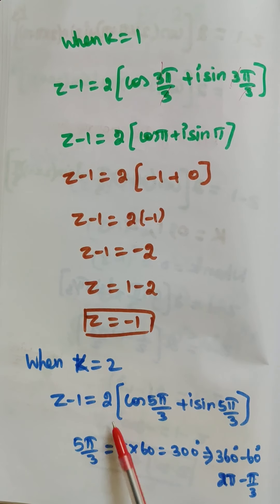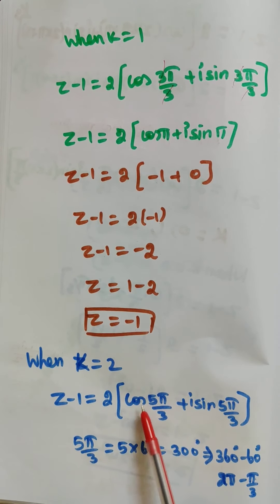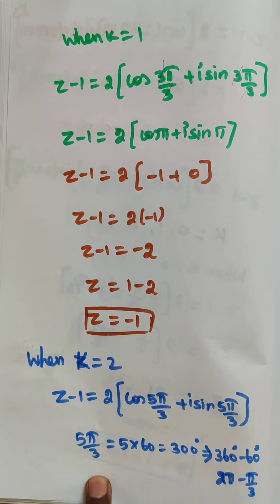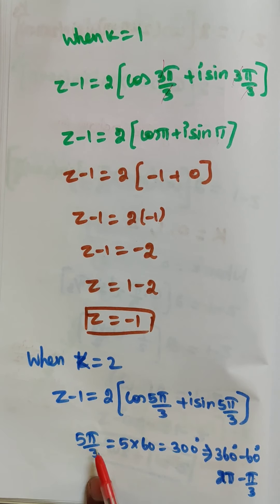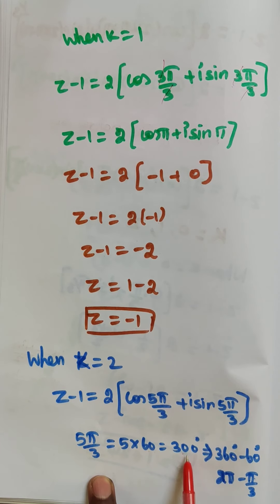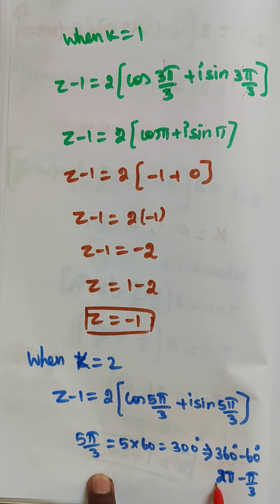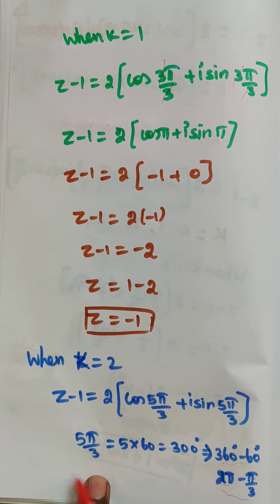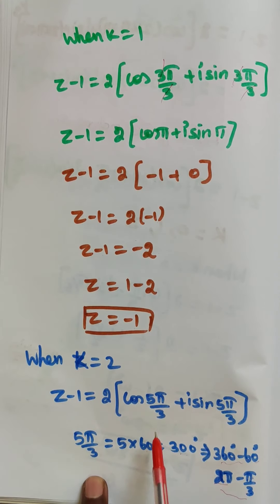When k equal to 2, substituting: 2 into 2 gives 4, plus 1 gives 5, so we get 2 into cos 5 pi by 3 plus i sin 5 pi by 3. Now 5 pi by 3 in degrees: pi by 3 is 60 degrees, so 5 into 60 equals 300, which is 360 minus 60. So 5 pi by 3 equals 2 pi minus pi by 3.